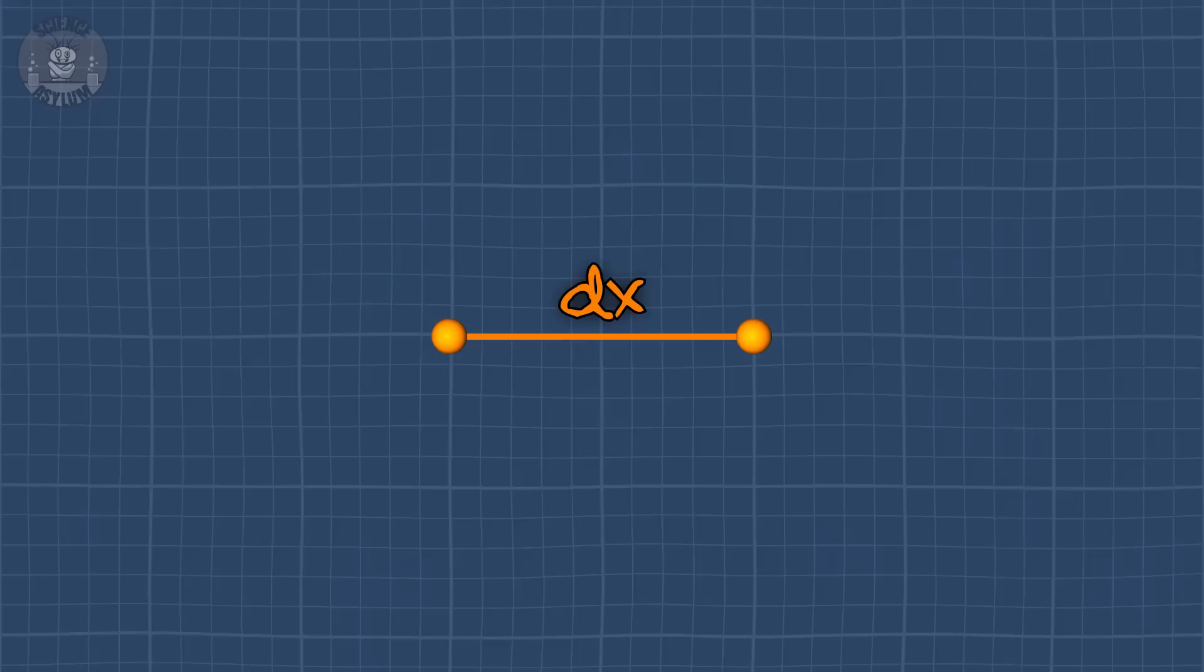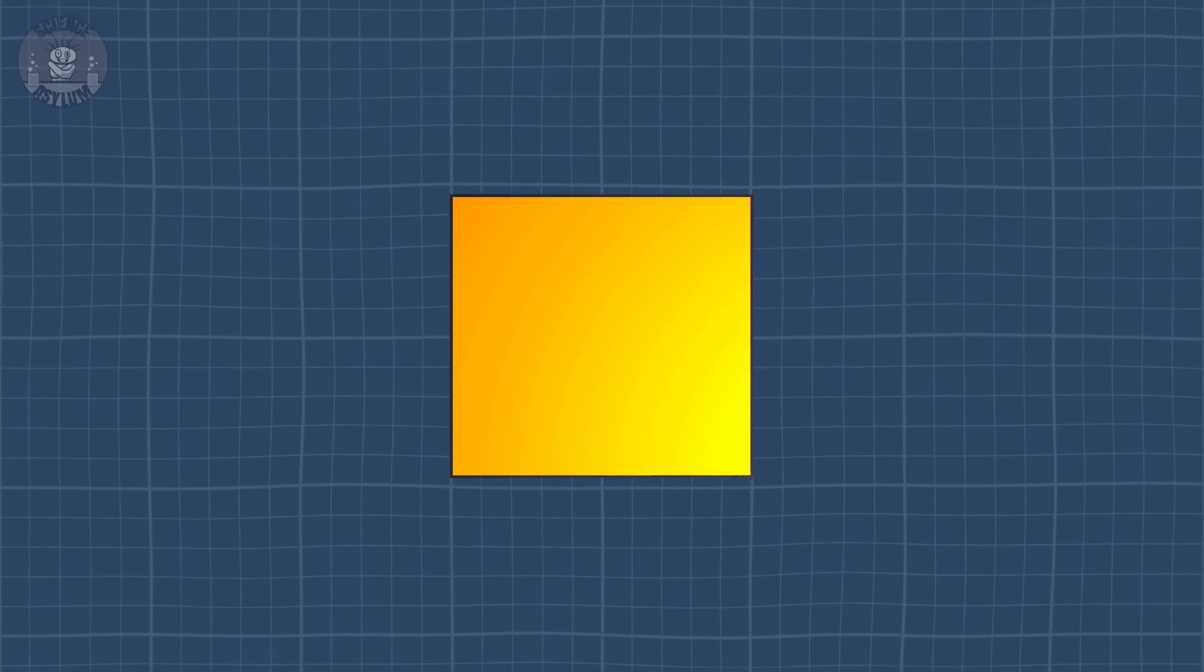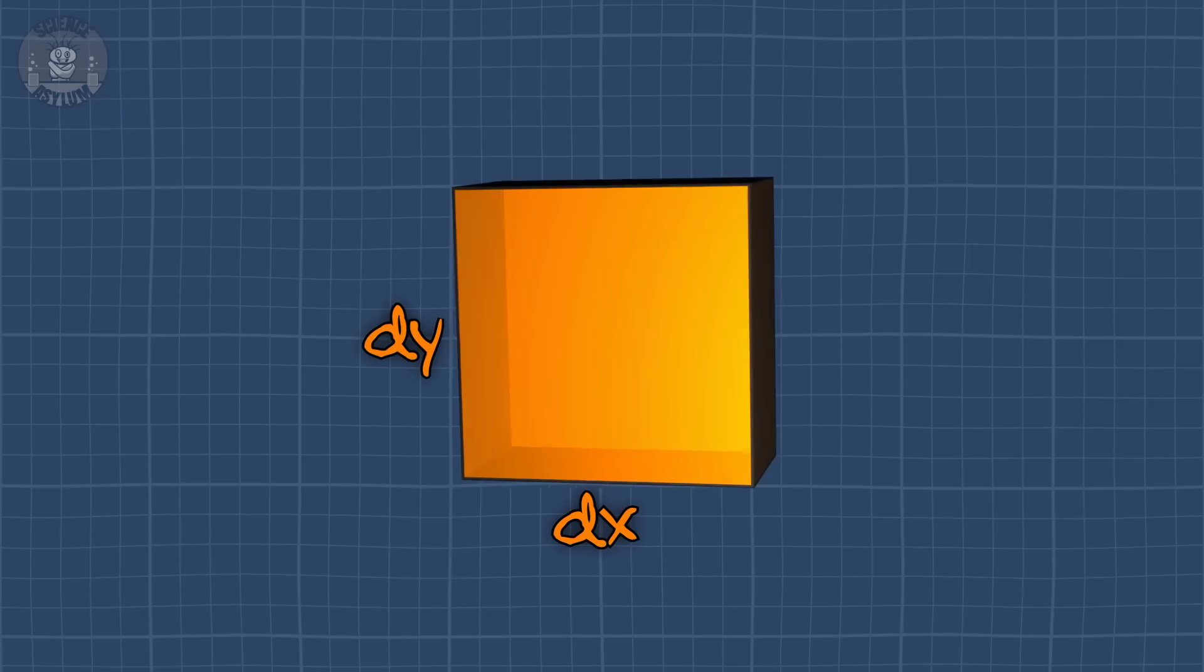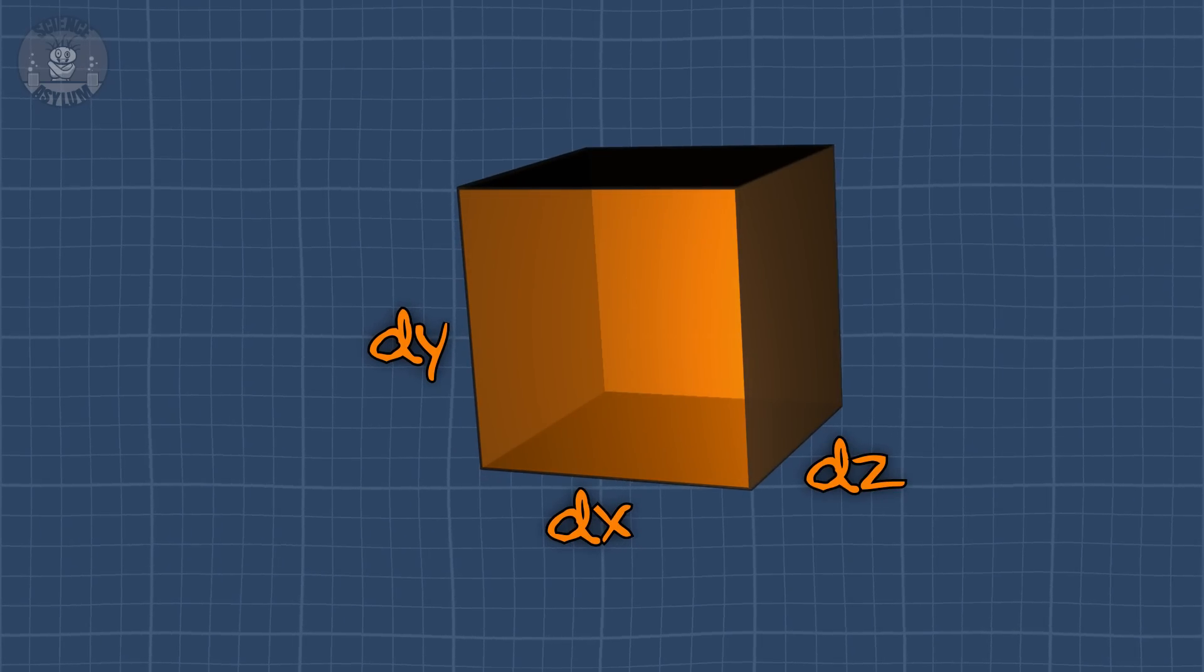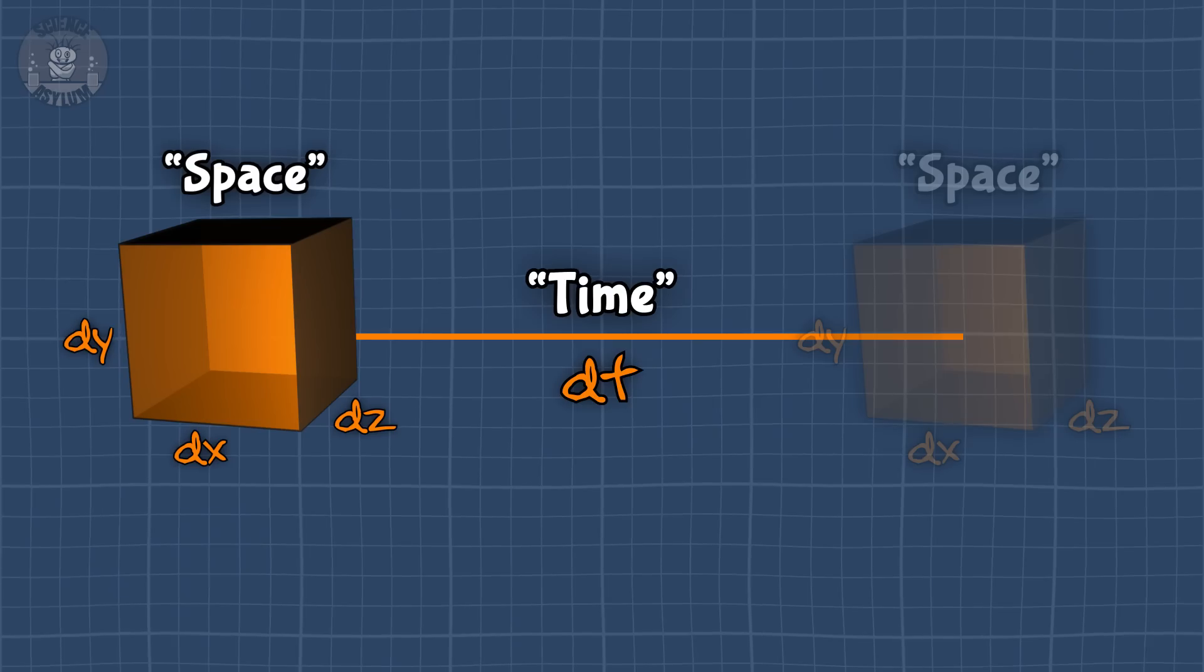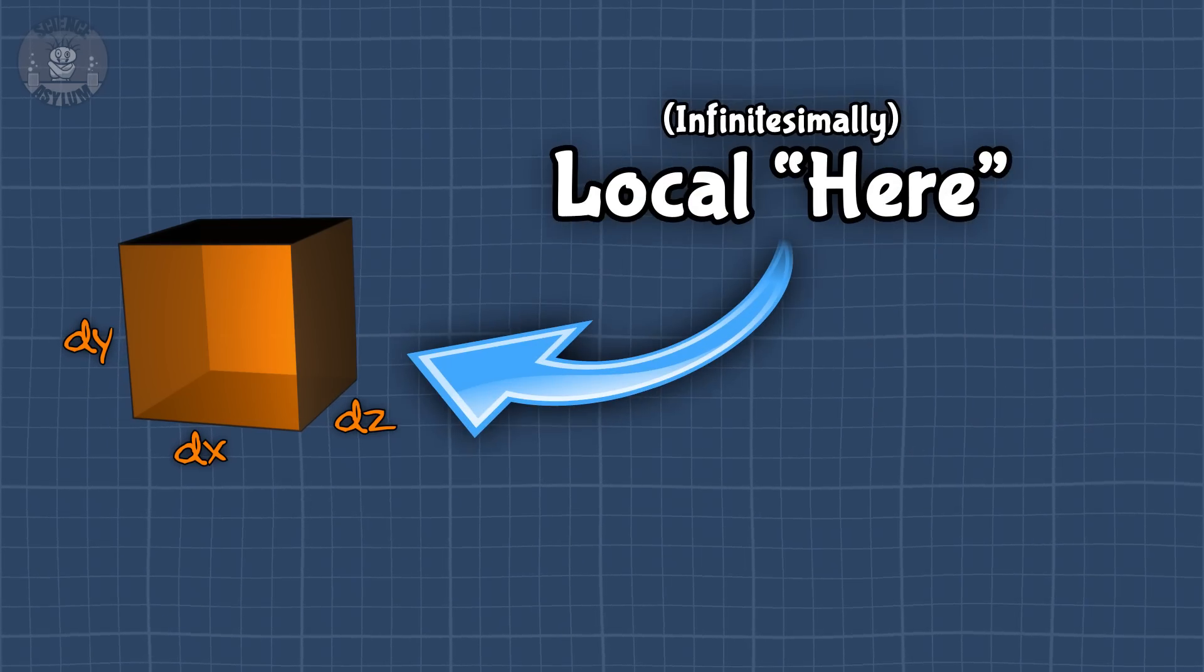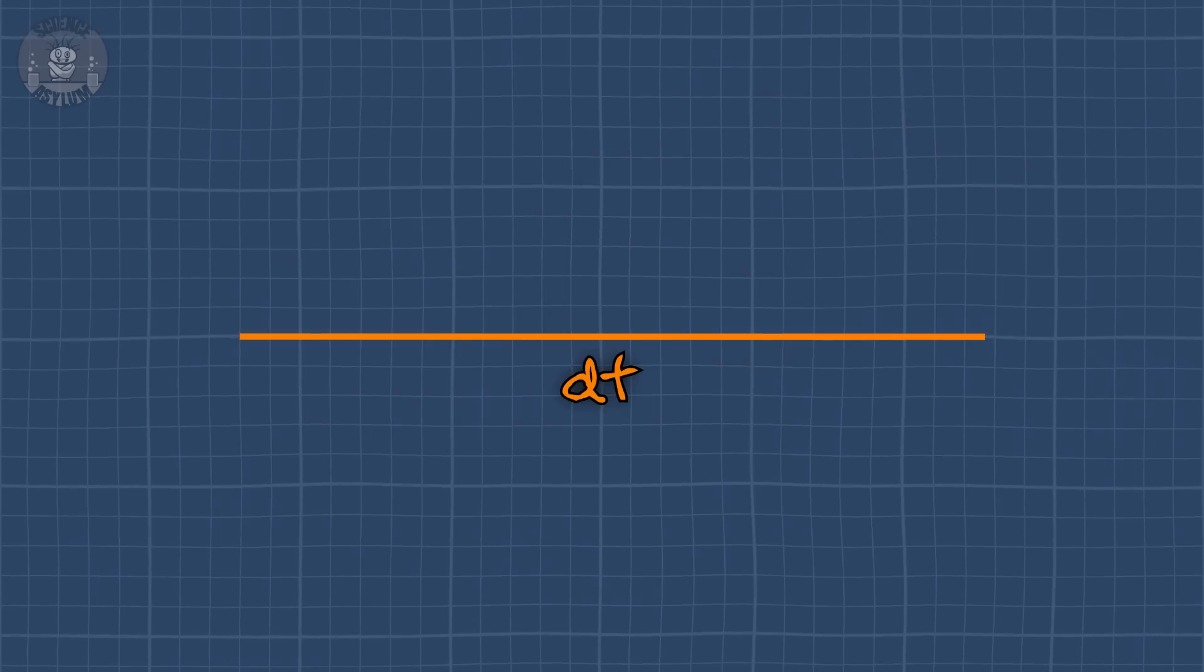Anyway, an infinitesimal is an amount of space that is as close to zero as we can get without actually being zero. It's as local as our math can get. Of course, dx is just one dimension. dx and dy make two dimensions. Include a dz and you've got three dimensions, also known as space. Include a dt and you've got a four-dimensional spacetime. The volume dx, dy, dz is the local here and the dt is the local now. That's all that really exists.